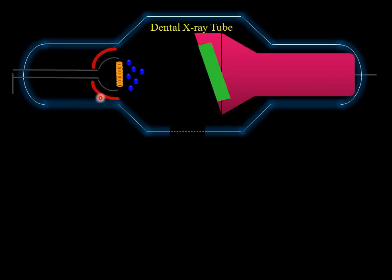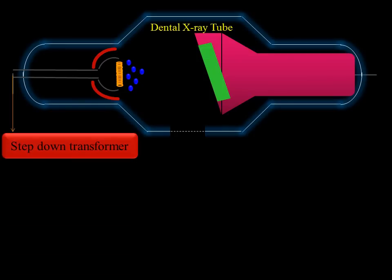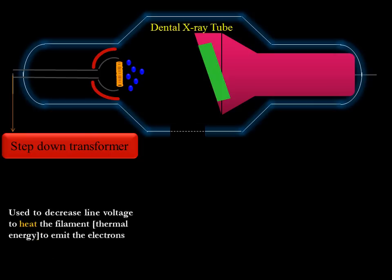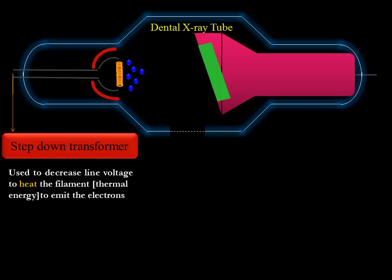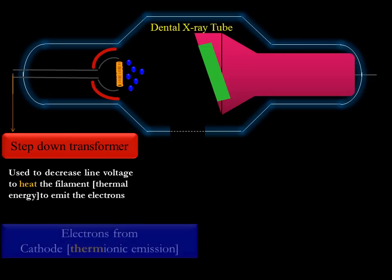The cathode of the dental x-ray tube is connected to a step-down transformer, which is used to decrease the line voltage to heat the filament to emit the electrons. The electrons produced are said to have been produced by thermionic emission.